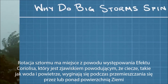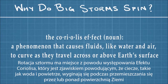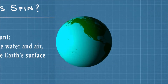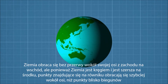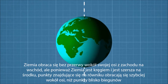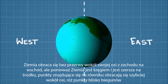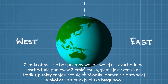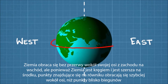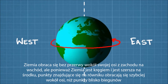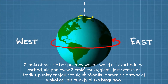A storm's rotation is due to something called the Coriolis effect, which is a phenomenon that causes fluids like water and air to curve as they travel across or above Earth's surface. Here's the basic idea: Earth is constantly spinning around its axis from west to east. But because Earth is a sphere and wider in the middle, points on the equator are actually spinning faster around the axis than points near the poles.